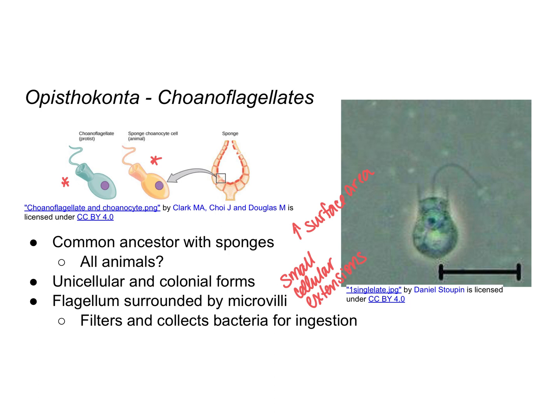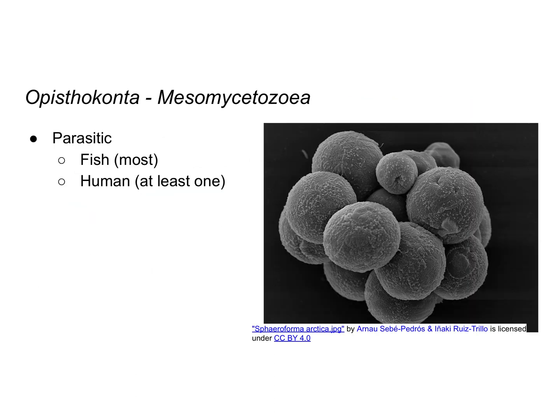By increasing surface area, it provides more area for nutrients to be absorbed. The flagellum can either help to move the protist around in its environment, or it can create a current to bring food towards the protist. The other subgroup of Opisthokonta includes the mesomycetazoa, which are primarily parasitic of fish.